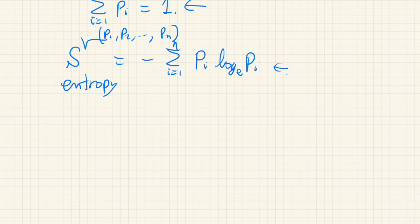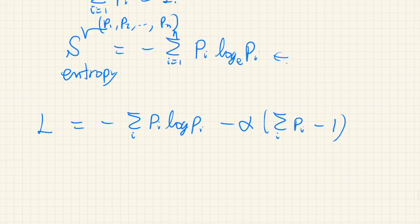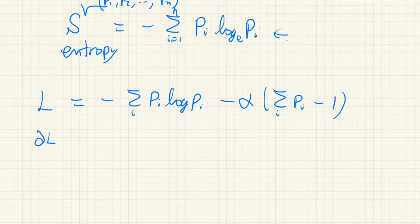Let's define the Lagrangian function. We put the entropy, then add a Lagrange multiplier alpha times the sum of the probabilities minus one. This gives the Lagrangian, and we want to maximize this with respect to the pi's. So let's differentiate this Lagrangian with respect to one of the pi's.